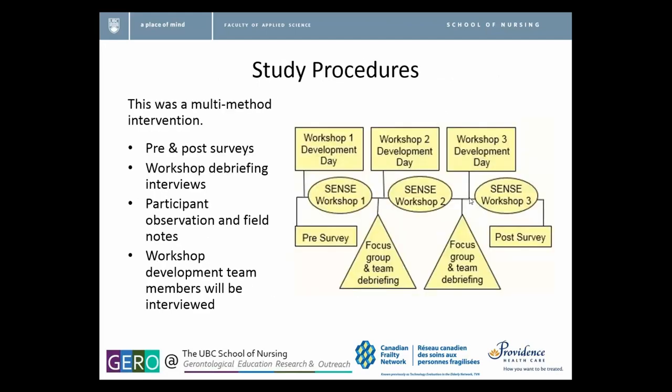These are the study procedures. This was a multi-method intervention. We started with a pre-survey of all family members at the study site, and from that developed the group that might be interested in participating. Then we came together — the researchers, clinicians, and family members who volunteered — for a workshop development day to think about what the workshops should look like and what content needed to be there for the first workshop. Then we held the workshop, did debriefing interviews and team debriefing in between, then had our development day for the second workshop, continuing in that round-robin of activities.